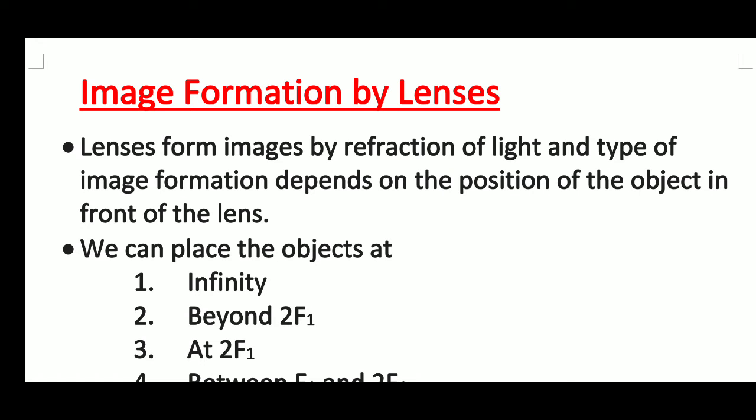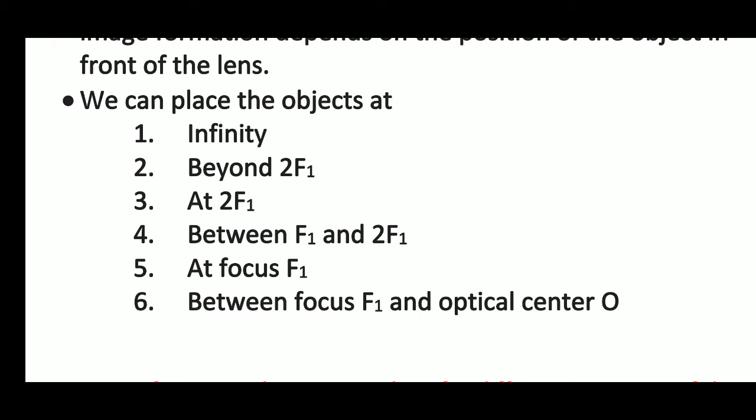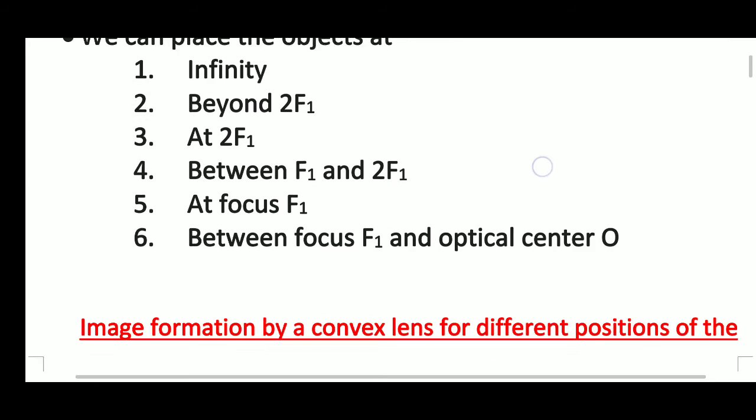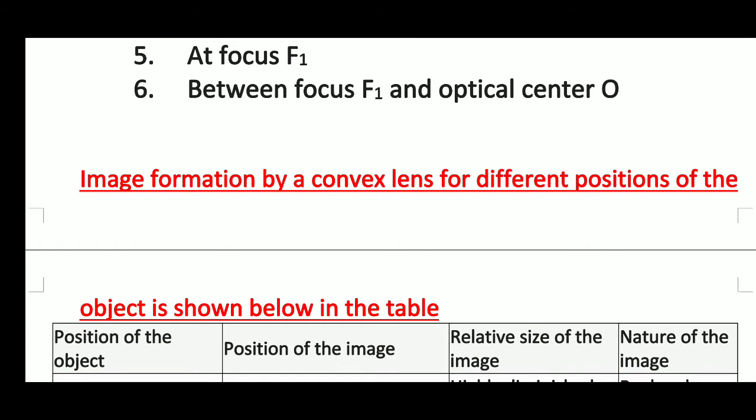Dear students, today we will discuss the topic of image formation by lenses. Lenses form images by refraction of light, and the type of image formation depends on the position of the object in front of the lens. We can place the object at six different positions: infinity, beyond 2f1, at 2f1, between f1 and 2f1, at focus f1, and between f1 and optical center O. Image formation by a convex lens for different positions of the object is shown below in the form of a table.